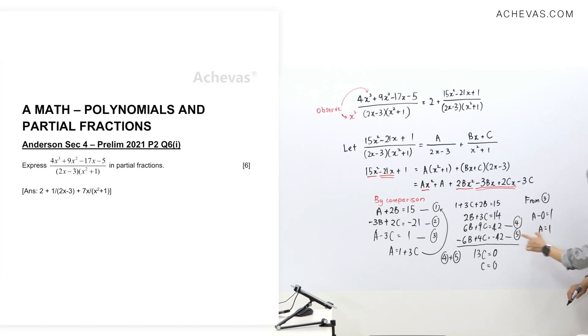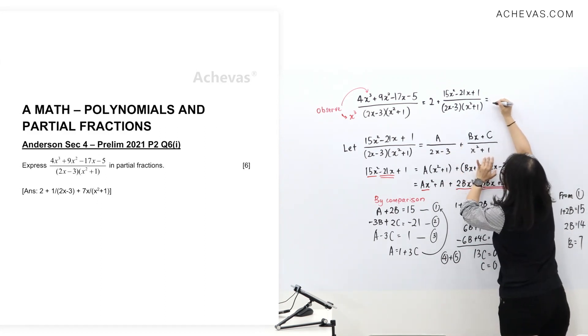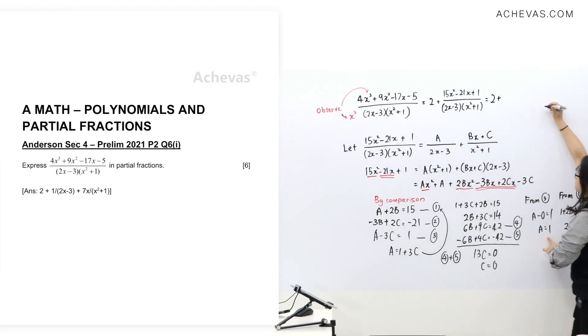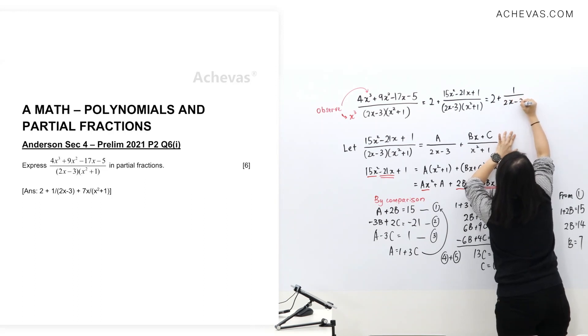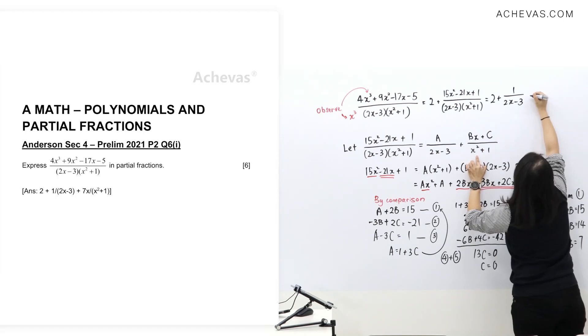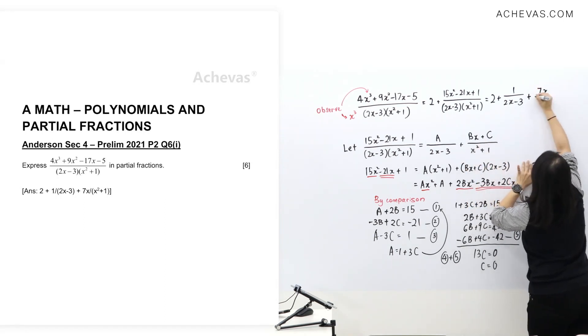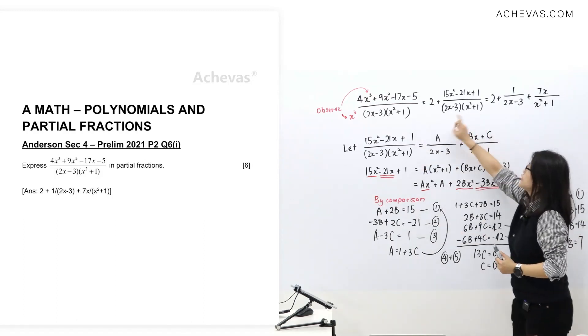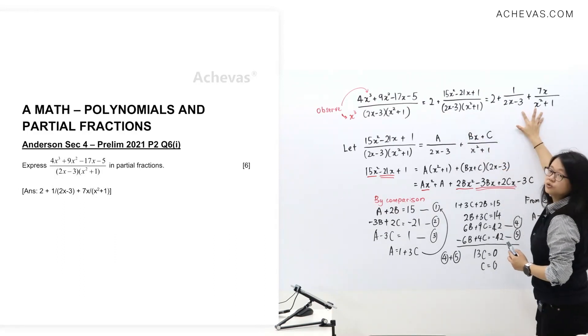Once I have 1, we're going to use equation number 1. B equals to 7. I'm going to replace this into the answer and rewrite it here. Remember I still have a 2 here. A value was 1, B value is 7, and C is zero so there's nothing else. See the process: we do long division to get the 2, and then we further split it up into the two fractions.